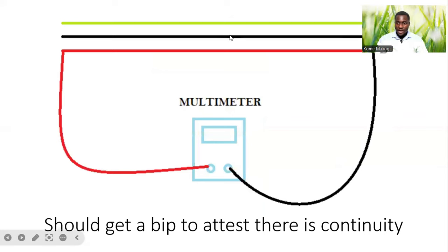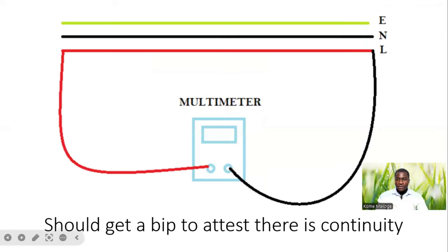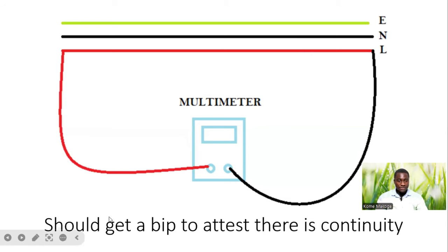Looking at this picture, we have different wires that have been pulled. We have the green wire, which is for earth; the black wire, which is for neutral; and the red wire, which is for live or phase conductor. Before carrying out the test, we get our calibrated multimeter and our test probes. We connect one end to the live and then connect to the same live at the other end. We should get a beep to confirm that there is continuity.